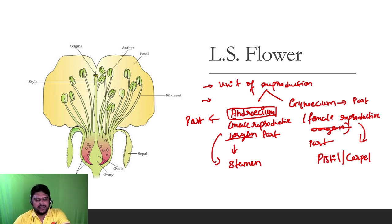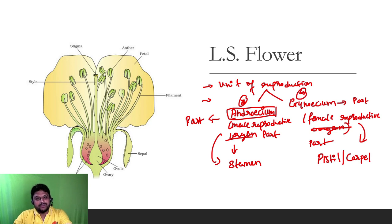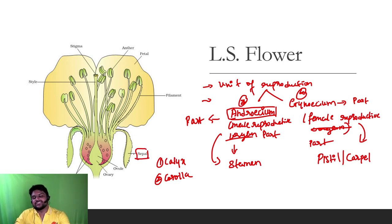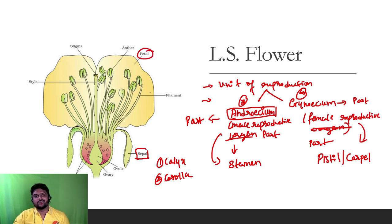Basically we have to divide the four whorls. The first whorl is the calyx, and the second whorl is the corolla. The calyx members are sepals — these green colored parts protect the flower in the bud stage. The second whorl is corolla, which is made up of petals. These petals attract pollinating agents.